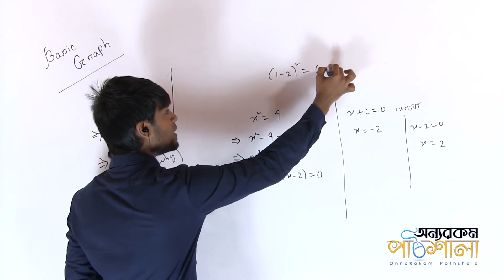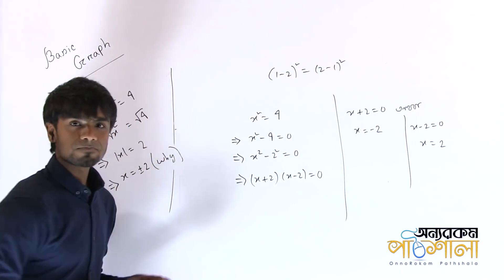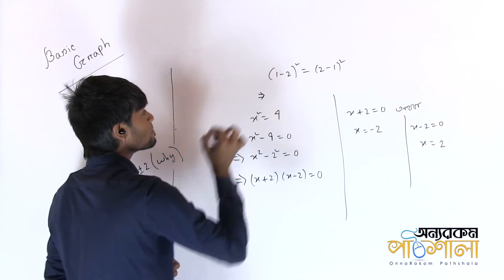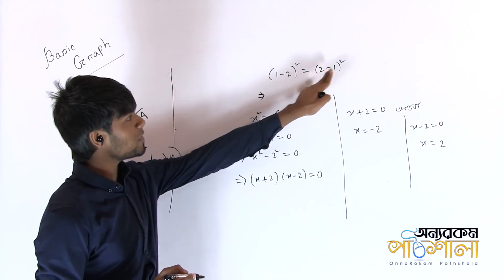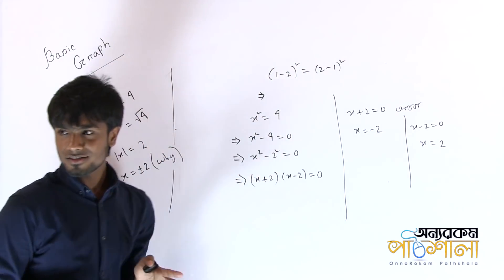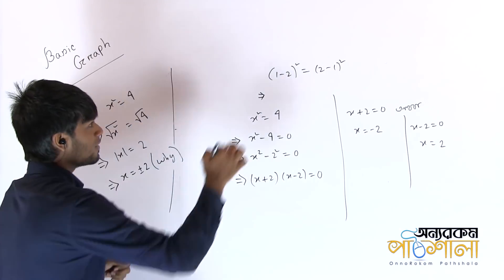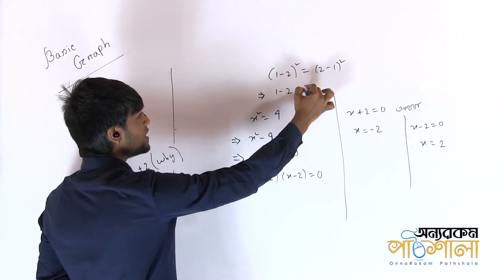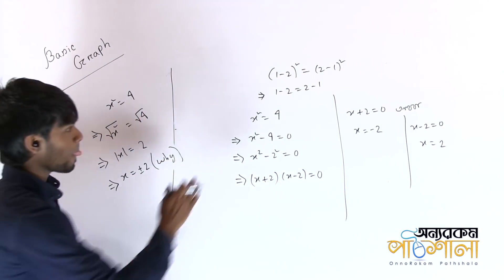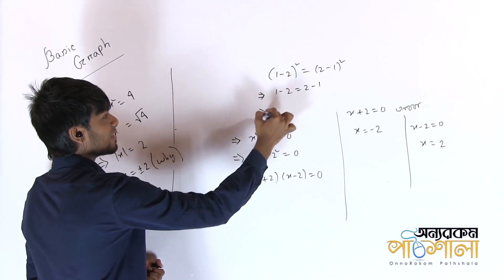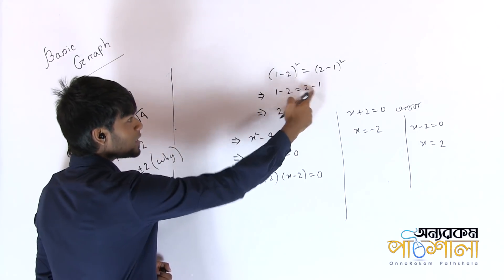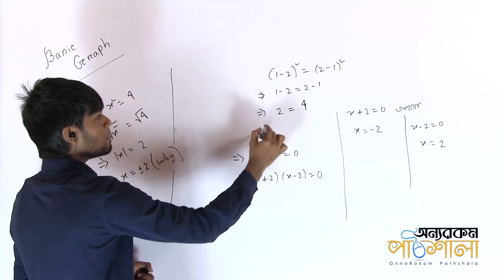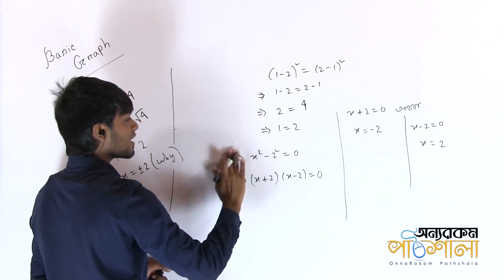I will show you a puzzle: 1 minus 2 whole squared equals 2 minus 1 whole squared. What do you do with this? Both sides squared are equal. 2 squared is cut. So 1 minus 2 equals 2 minus 1, which gives minus 1 equals 1. That means 1 equals 2. This is the problem with the parallel line!